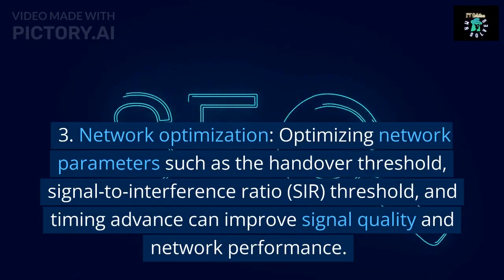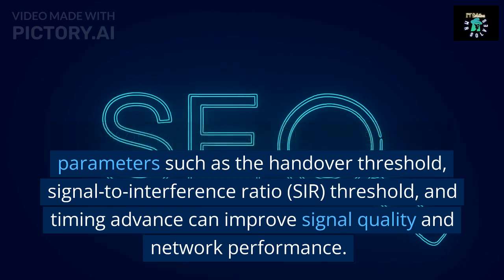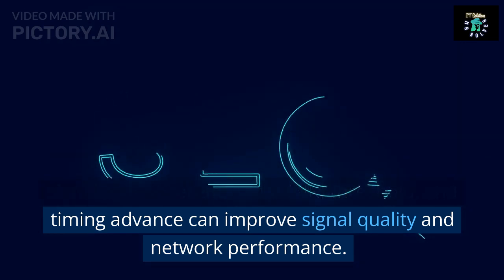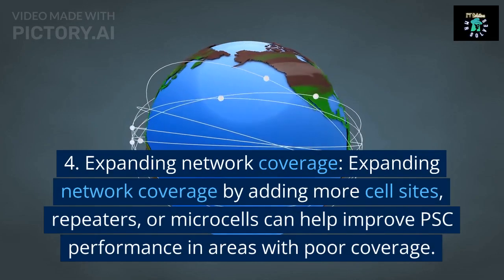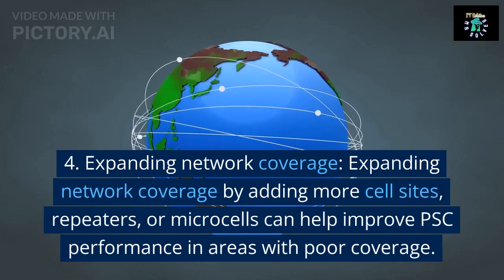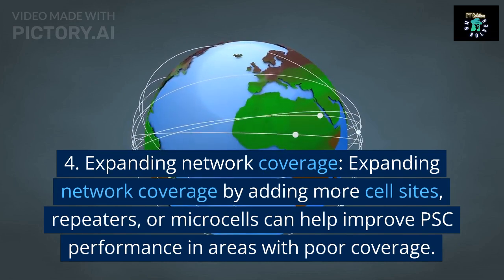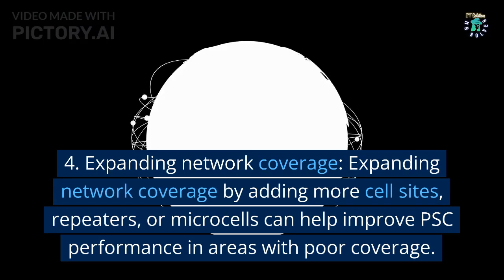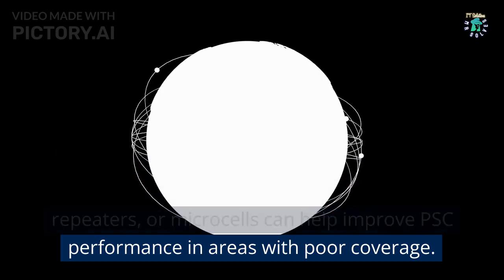Network optimization — including optimizing parameters such as the handover threshold, signal-to-interference ratio (SIR) threshold, and timing advance — can improve signal quality and network performance. Expanding network coverage by adding more cell sites, repeaters, or microcells can also help improve PSC performance in areas with poor coverage.